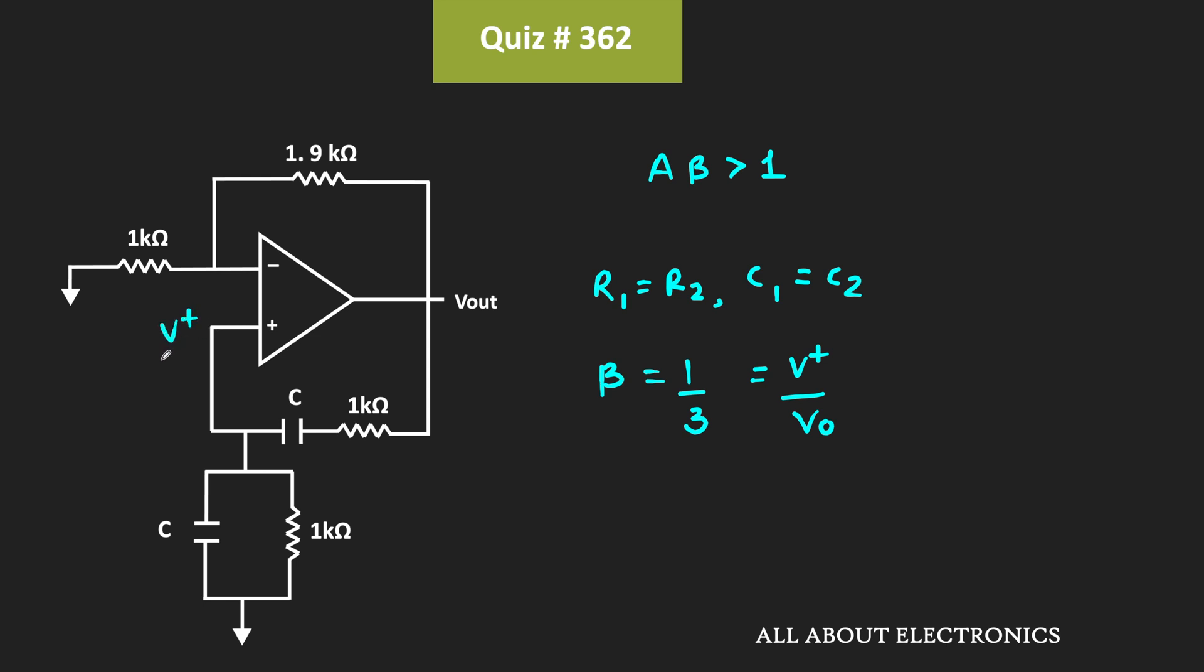For this Weinbridge oscillator to get sustained oscillation, the value of A should be slightly greater than 3. In this case, the gain of the amplifier is equal to 1 plus R₄ divided by R₃, because the op-amp is configured in non-inverting configuration.